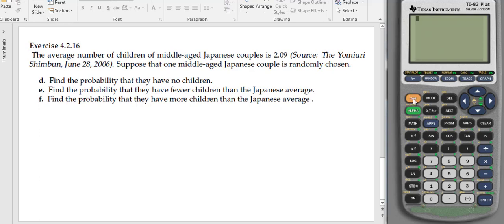To solve this problem, we have to go to the distribution button. Second, Vars will bring us the distributions. We scroll down to get to the Poisson. Because this is no children, we're going to be using the Poisson PDF distribution.